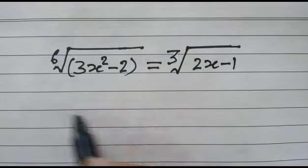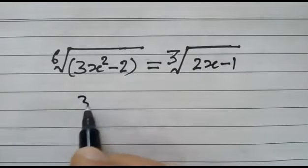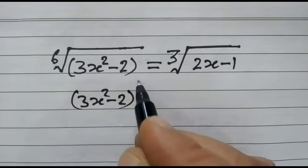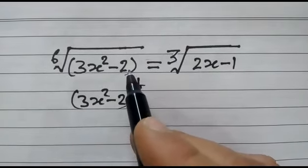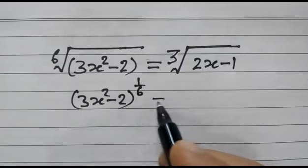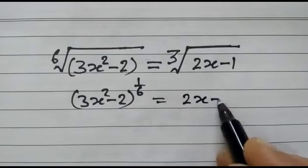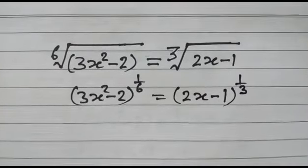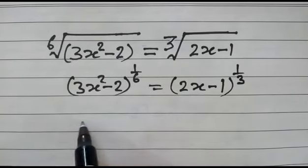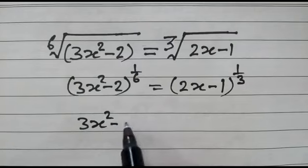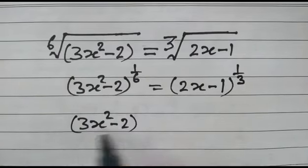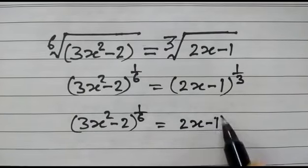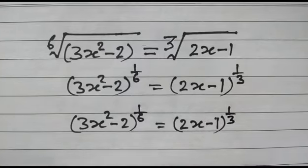Now we can change the form: 3x squared minus 2 to the power 1 by 6. We can write this as this form, equal to 2x minus 1 whole power 1 by 3. So 3x squared minus 2 whole power 1 by 6 is equal to 2x minus 1 whole power 1 by 3.